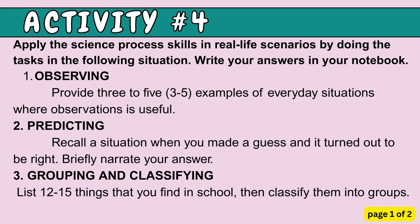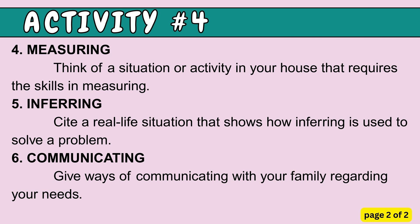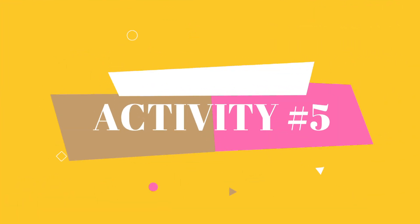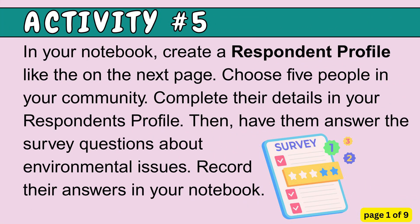Activity number 4: Apply the science process skills in real-life scenarios by doing the tasks in the following situation. Write your answers in your notebook. Activity number 5: In your notebook, create a respondent profile. Choose 5 people in your community, complete their details in your respondent's profile, then have them answer the survey questions about environmental issues. Record their answers in your notebook.